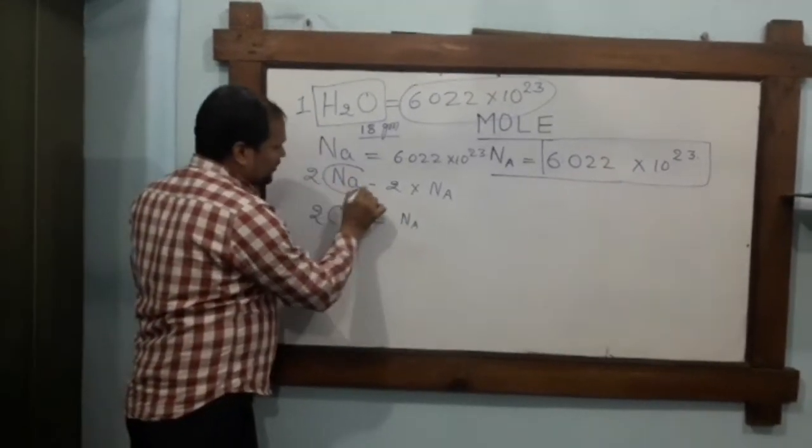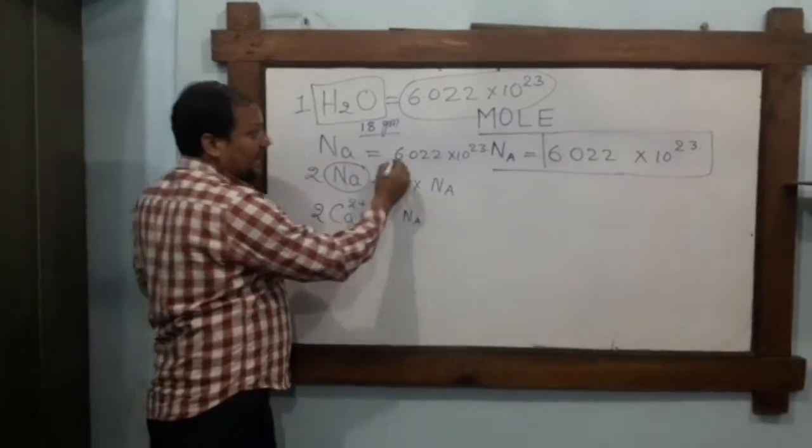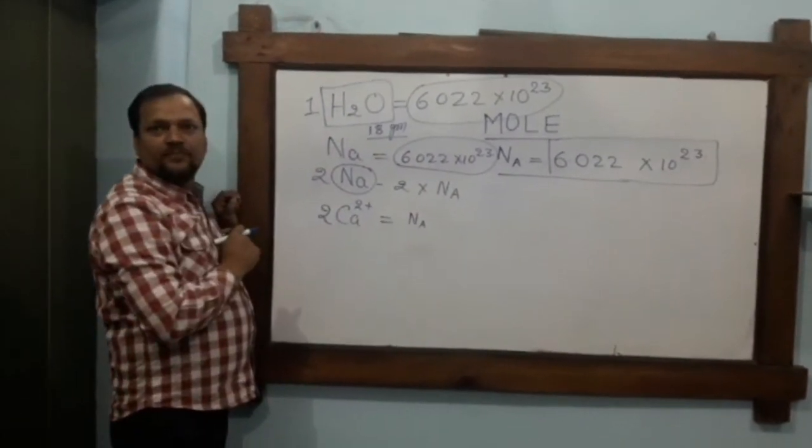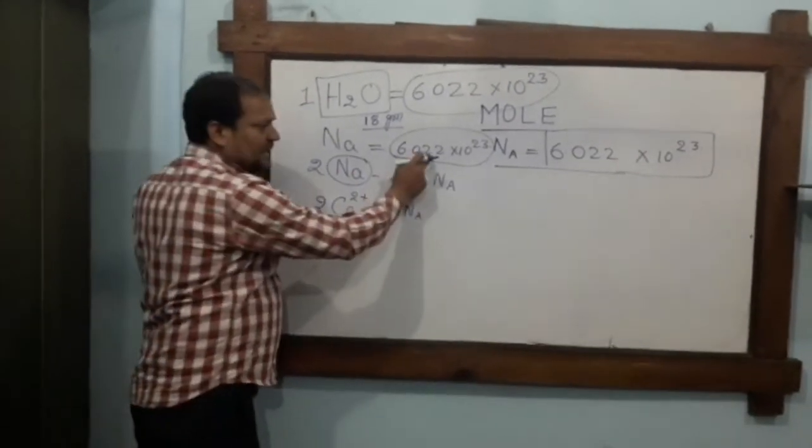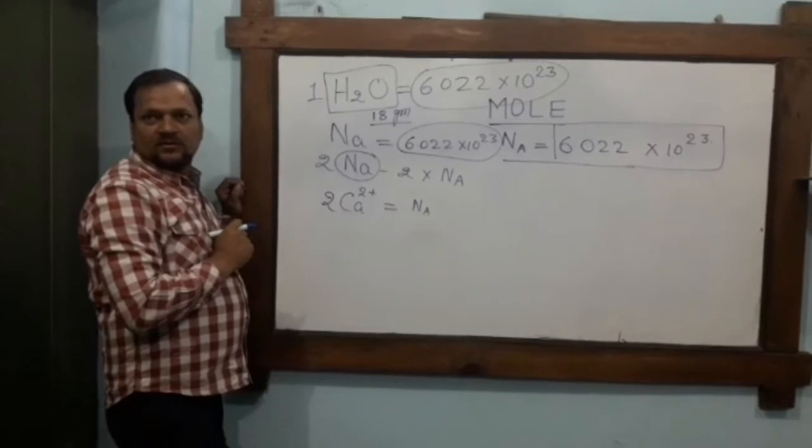Similarly, if we have 23 grams of sodium, that represents one mole of sodium, containing 6.022 × 10²³ atoms of sodium.